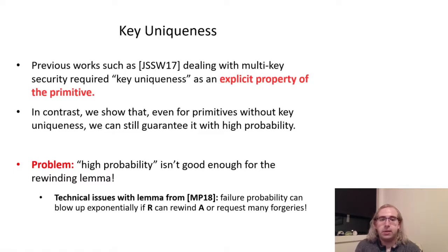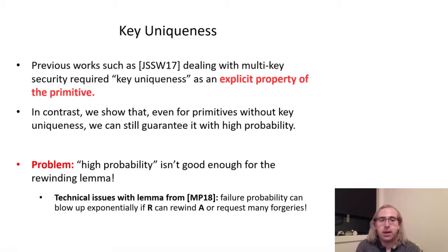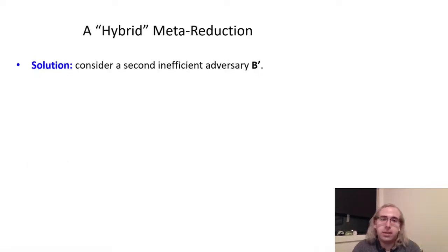There is still an additional issue. There are some technical details concerning a rewinding lemma, which require that the forgery output by A or B has to be unique all of the time, rather than just with high probability. At a high level, we need to show that the reduction R attempting to rewind the adversary A is pointless and will yield no additional information, as rewinding by R can potentially blow up the running time or the failure probability of the meta-reduction B in an uncontrollable way. However, if A or B could potentially output multiple different forgeries for a single set of tag queries, this is clearly not the case, as R could attempt to rewind A to try to extract different forgeries from the same instance of A. So, to deal with this, we need a variant of B that does guarantee a unique forgery.